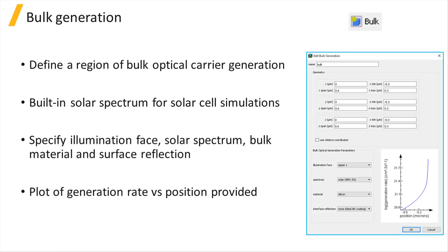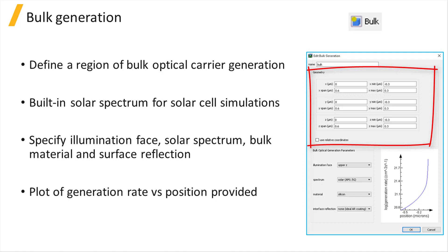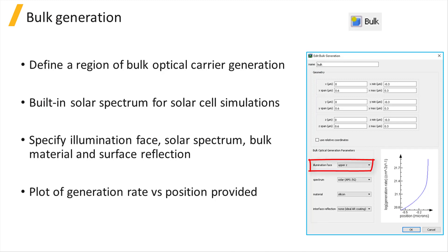The bulk generation source object allows the user to define a simple analytic charge carrier generation model within the bulk of a semiconductor material due to solar absorption. It is most commonly used to model optical generation in solar cells as it includes built-in solar spectrum data needed for generation rate calculation. The location and size of the object can be adjusted in the geometry section, and the direction of illumination can be chosen by picking one of the six sides of the cubic region.